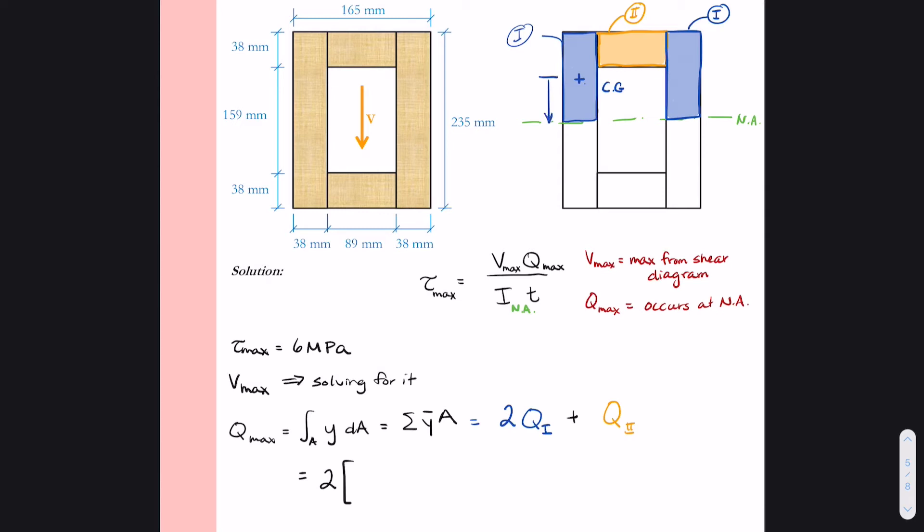For this beam, that distance is going to be 235 millimeters divided by 2. That gives us the total height of the top part of the cross section and then divide that by 2 again. So 235 divided by 4, which is 58.75 millimeters. So that becomes our value for Y bar for the blue shaded area.